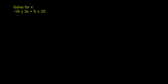We're asked to solve for x. We have this compound inequality: negative 16 is less than or equal to 3x plus 5, which is less than or equal to 20. There are two ways to approach it, which are really the same way, and I'll do both of them simultaneously.